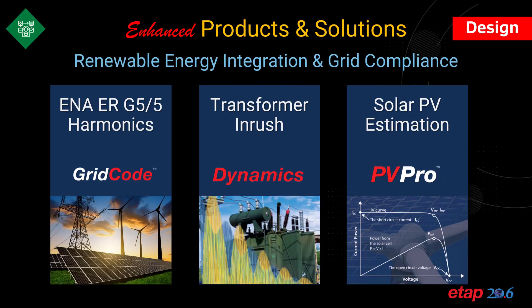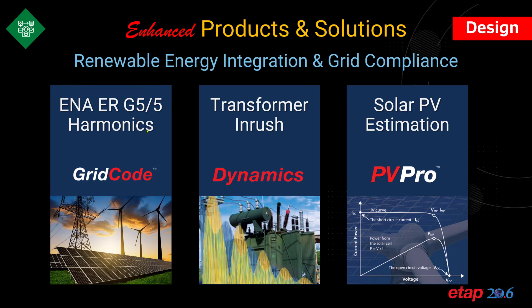ETAP 20.6 continues its enhancements for renewable energy integration and grid compliance. At the forefront is ETAP grid code, which now allows for ENA ER G55 based harmonic grid code compliance.